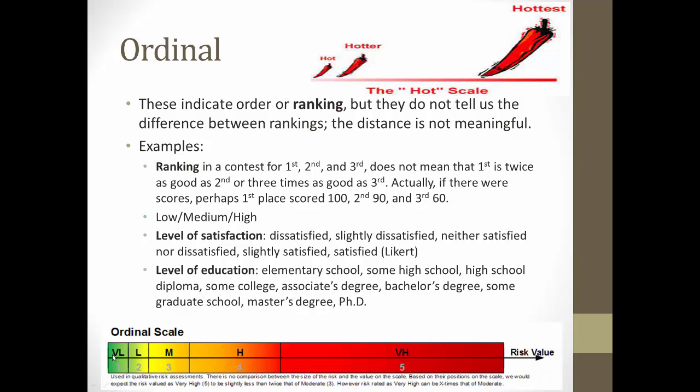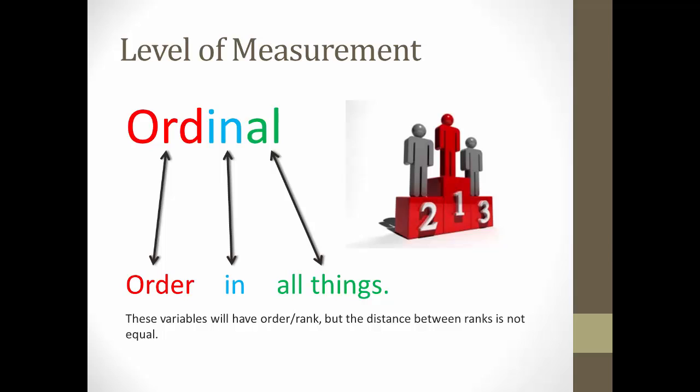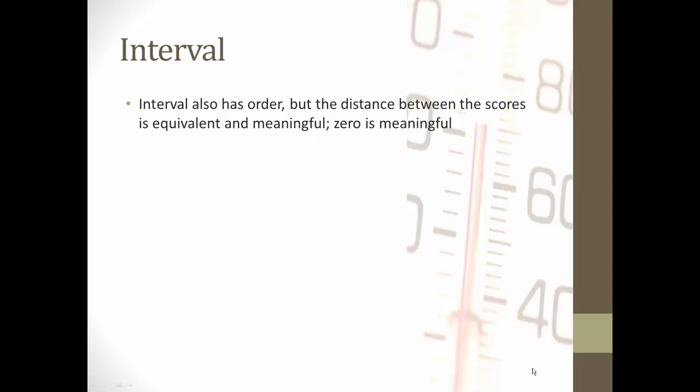Now, here's a visual. If something's rated very low, low, medium, high, and very high, this is talking about risk value of something, you can tell that there's not an equal interval between these things. So that's ordinal, is order and ranking, but there's no necessary equidistant value between each one of the rankings. Now, here's another visual, order in all things. Now, these variables have order and rank, but the distance is not equal. And this is kind of a good visual of it. First place you can see is higher than second and third, but second and third look about the same level. Second might be a little higher than third here, but you can tell that there's a big difference between first and second.